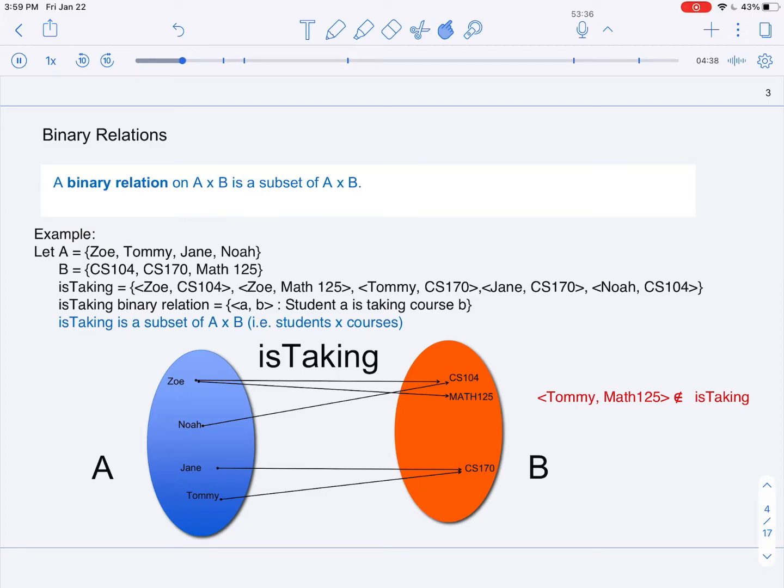Now our is-taking binary relation is essentially mapping the students to classes that they're taking. For example, we have the ordered pair Zoe, CS-104, to indicate that Zoe is taking CS-104.